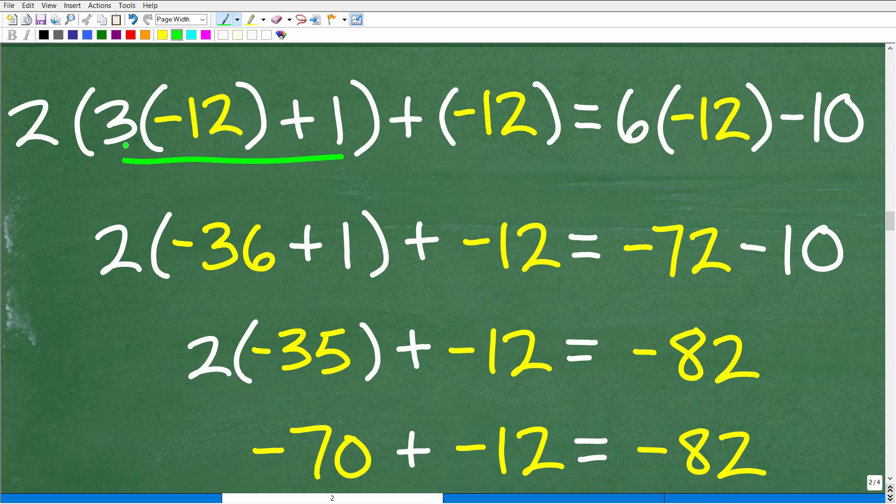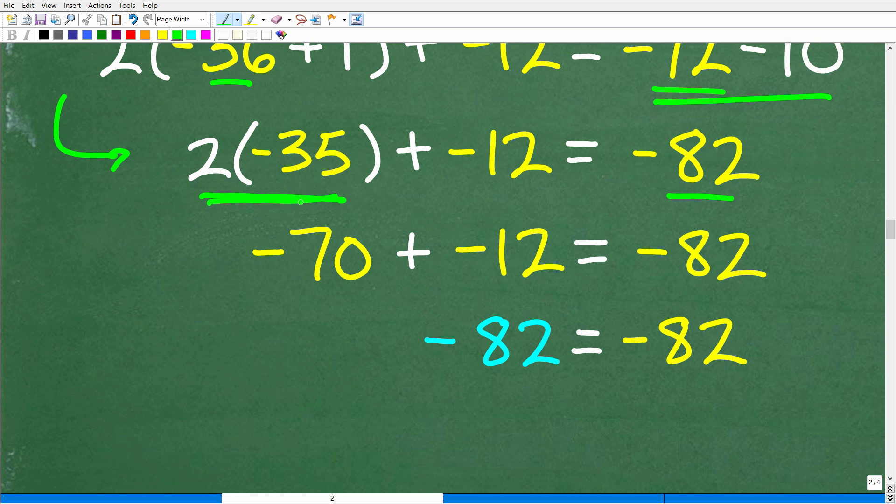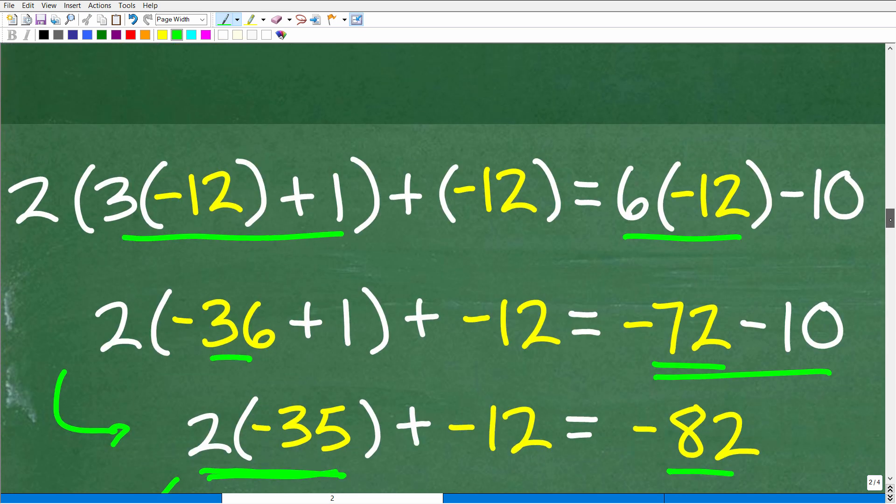And now, let's go ahead and start simplifying this big numeric expression. All right. So, we'll start right here inside these parentheses. So, 3 times negative 12 is negative 36 plus 1. We'll clean that up in a second. Plus negative 12. And then 6 times negative 12 right here is negative 72. So, negative 36 plus 1, that's negative 35. So, we have a 2 times negative 35. We'll get to that in one second. Plus negative 12. And over here, we have negative 72 plus a negative 10 or a minus 10. That gives us a negative 82. All right. So, we're just working this problem down. So, now we have 2 times negative 35. That gives us a negative 70 plus this negative 12. Negative 70 plus negative 12 is negative 82. We already had a negative 82 on the right-hand side. So, negative 82 is equal to negative 82. This is a true statement.